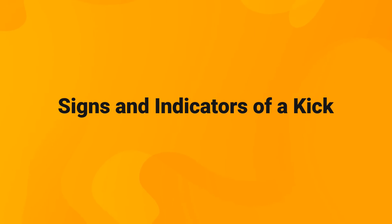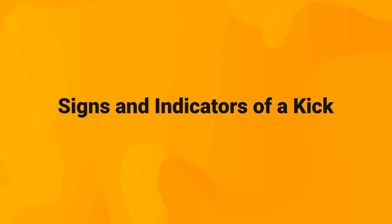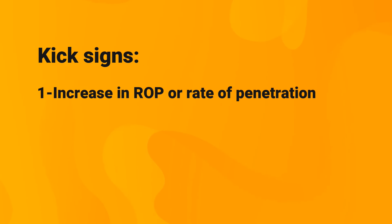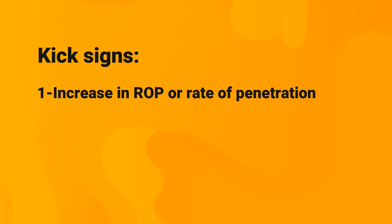There are plenty of signs and indicators that can be observed. Kick signs are warning signs that a potential kick might happen, whereas kick indicators are proof that a kick has been taken. Kick sign number one is an increase in rate of penetration, or ROP. This is because a kick is usually received from an abnormally pressurized zone, which tends to have higher formation pressure, higher volumes of fluids, and higher porosity — making these formations more drillable due to lower formation density.